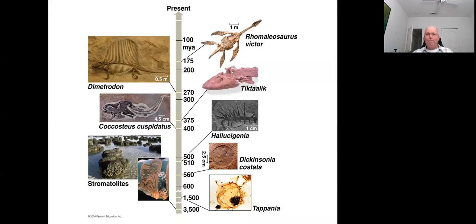The next major step is the appearance of vertebrates, roughly 470–480 million years ago, in the form of early fish. Throughout the Devonian we see the diversification of fish — these are the first vertebrates we recognize. Then around 470 million years ago we start to see the first evidence of plants colonizing dry ground, along with fungi.